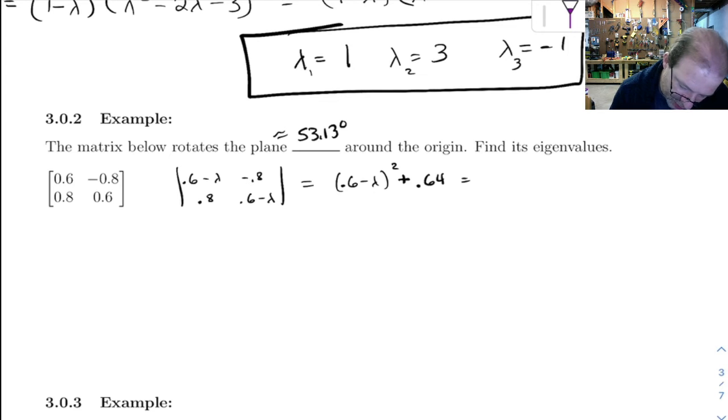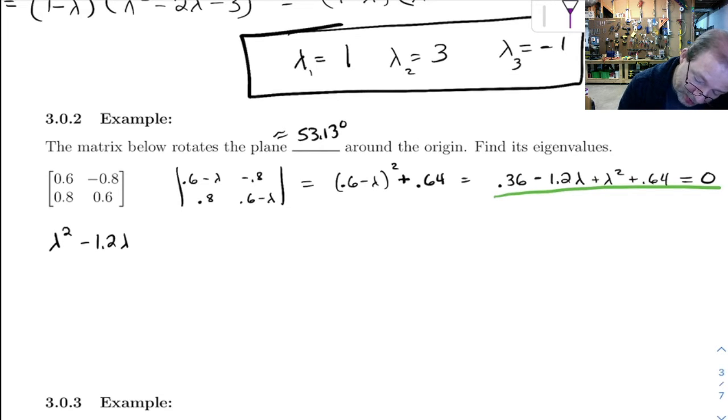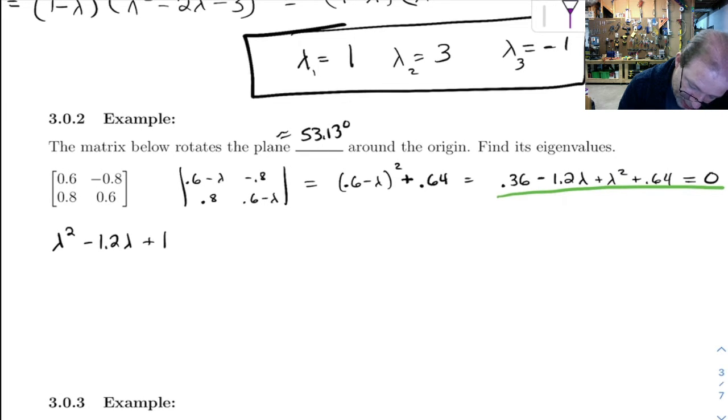And let's see, if we square that out, 0.6 squared is 0.36 minus 1.2 lambda plus lambda squared plus 0.64, and all that we set equal to 0 and solve. So let's solve this equation here. That's a quadratic, so let's combine stuff together. You got lambda squared minus 1.2 lambda, then plus 0.64 and 0.36 gives you 1. So you've got to solve this.